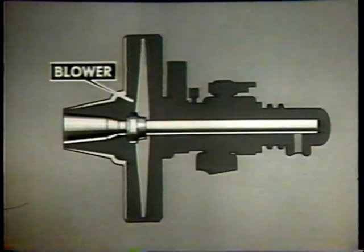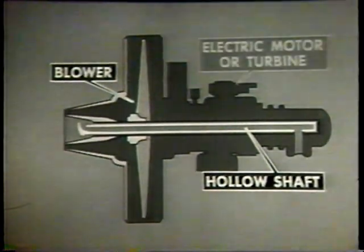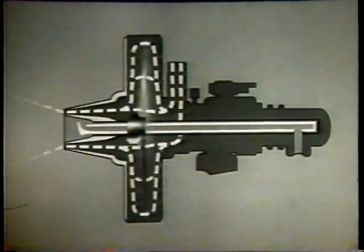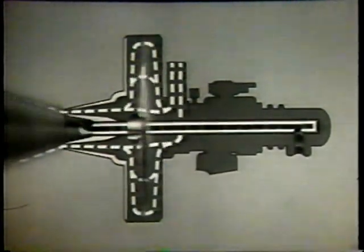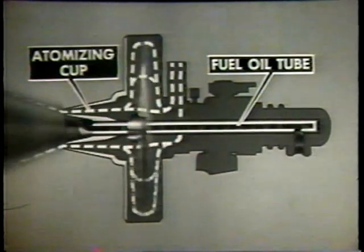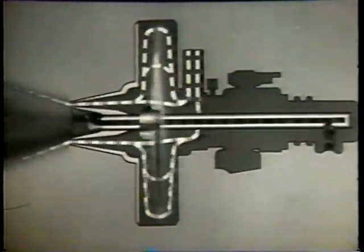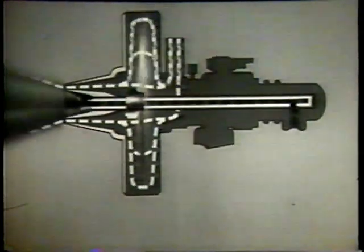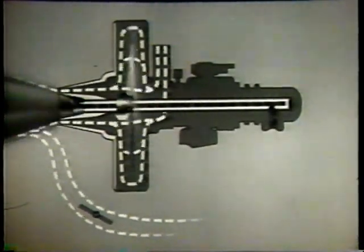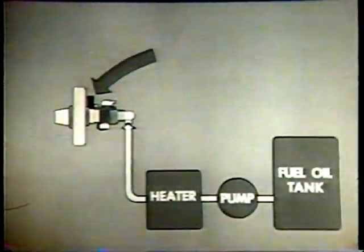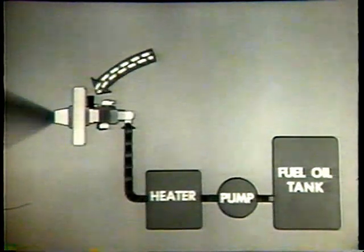In the rotary cup burner, a fan or blower is mounted on a hollow steel shaft. An electric motor or steam turbine turns the shaft and blower at high speed, providing a blast of air around the burner nozzle. The oil, under low pressure, enters through a stationary fuel oil tube inside the rotating hollow shaft and is discharged into the rotating atomizing cup. Centrifugal action forces the oil against the inner surface of the atomizing cup and causes the oil to leave the rim as a hollow cone. The meeting of the oil and the air from the blower further atomizes the oil. Additional air needed for proper combustion enters through an air door in the furnace wall. As in all burners, you control the firing rate by controlling the amount of fuel oil and air going to the burner.